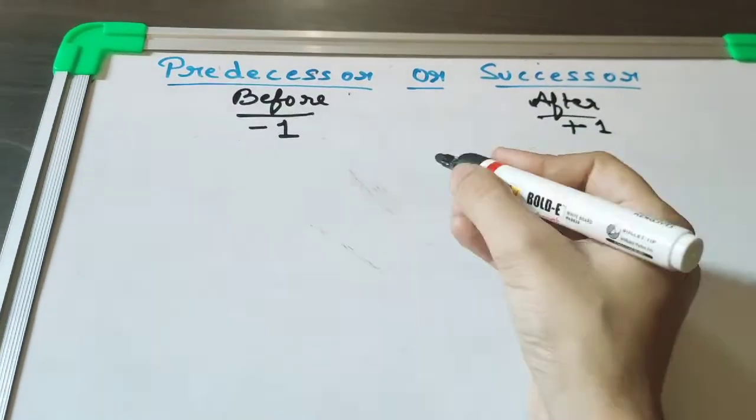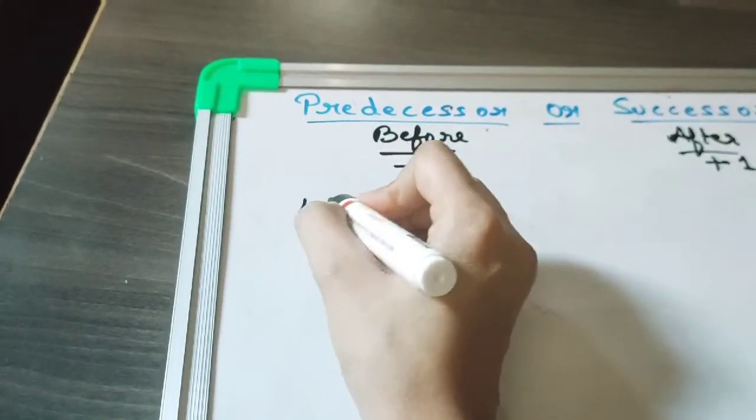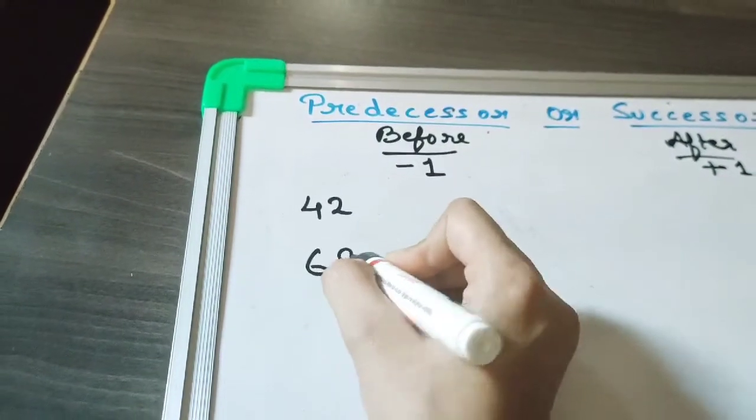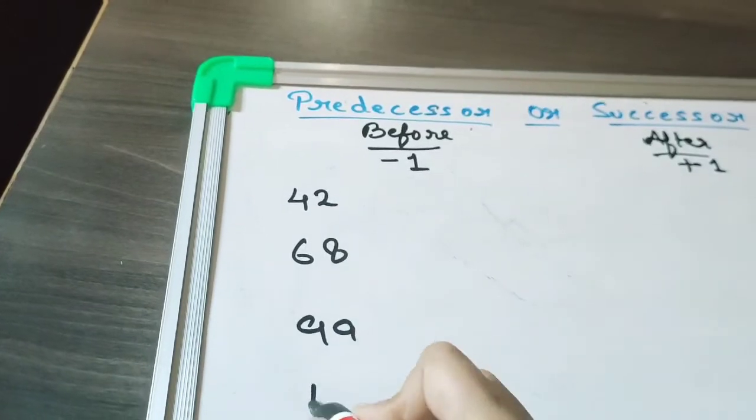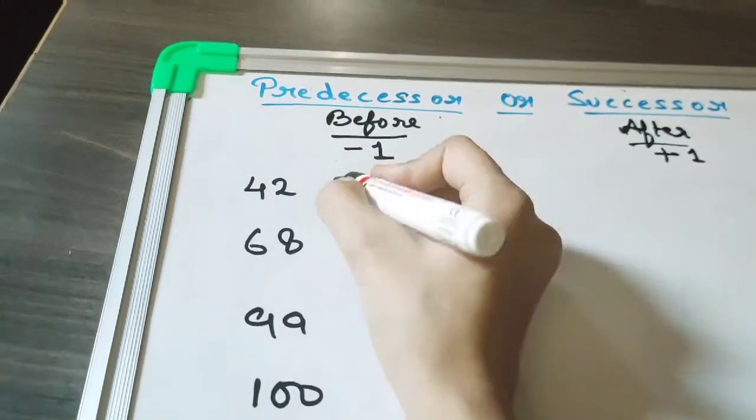For example, 42, 68, 99, and 100. Now first we will write the predecessor, so we have to write the predecessor.